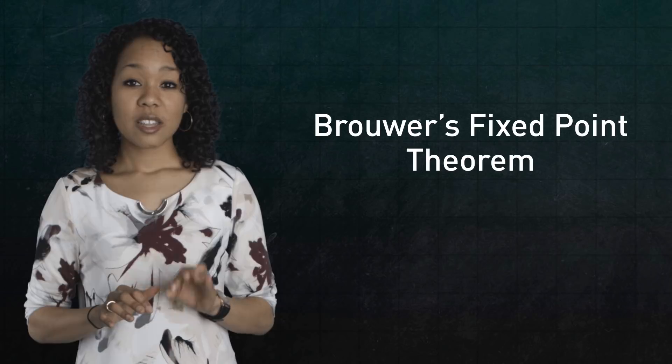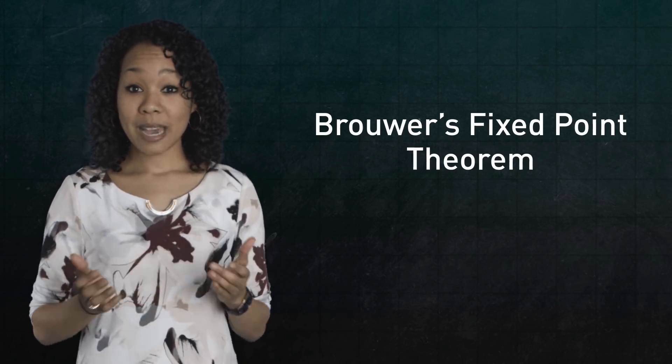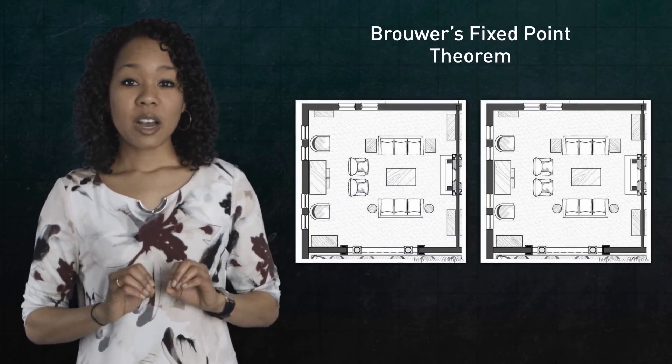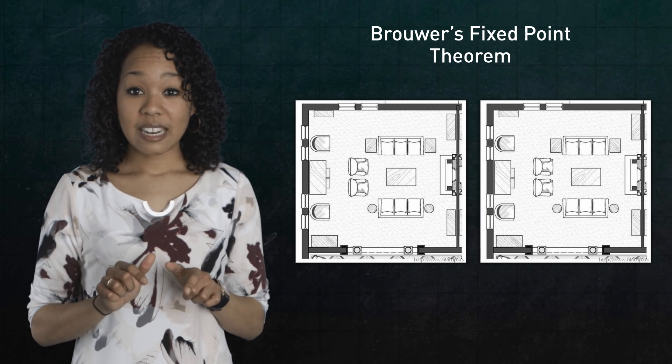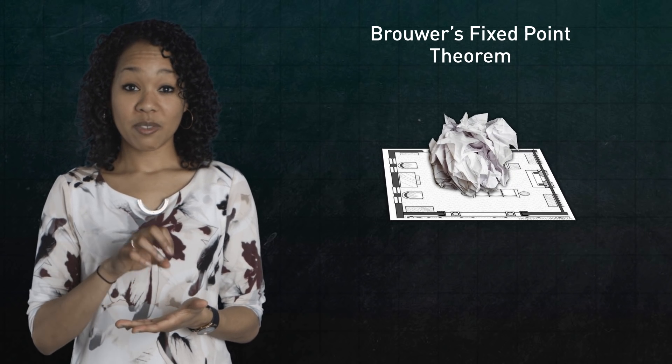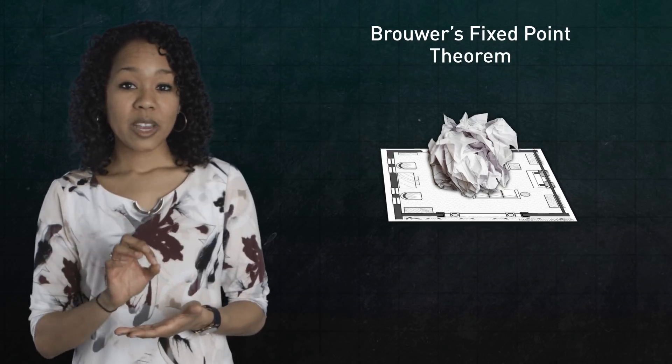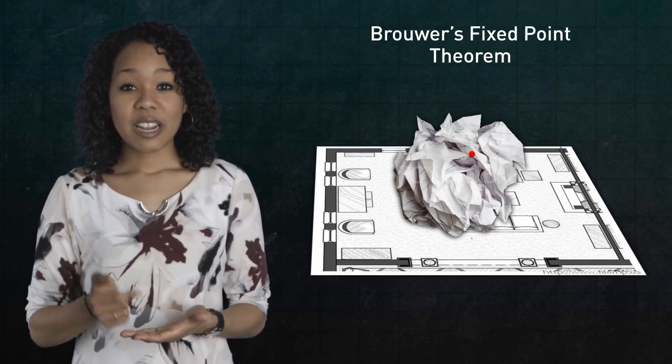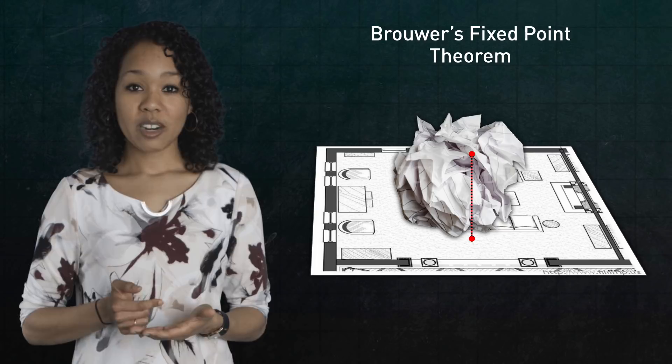In two dimensions, the theorem is often illustrated with maps. If you have two copies of a map of the room you're in, and you lay one flat but crumple the second and lay it on top of the first, there's always one point on the crumpled map that sits directly above that corresponding point on the map below.